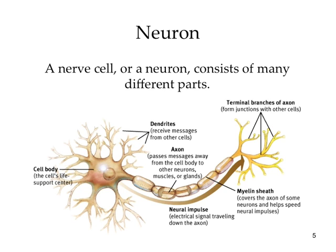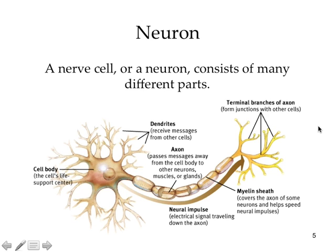Dendrites are the shorter, bushy fibers that receive messages from other cells — your dendrite is a good listener, it takes in information. Axons, on the other hand, push the neurotransmitter to the next receiving neuron — axons speak, they send out information across the synaptic gap, while dendrites listen. The path of neurotransmission goes: dendrite, cell body, axon, terminal bud, synaptic gap, and then another receiving dendrite. Axons can extend several feet throughout the body, while dendrites tend to be pretty short. The cell body is the cell's life support center.